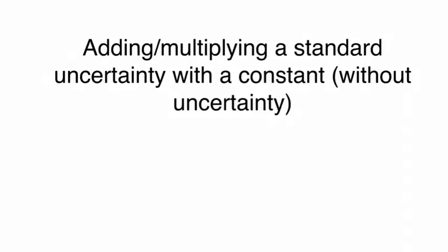Let's quickly look at what is going to happen when we have a measurement with an uncertainty and we want to add or subtract or multiply or divide with a constant that does not have an uncertainty.